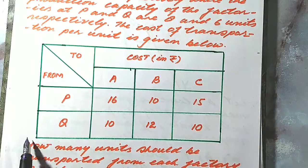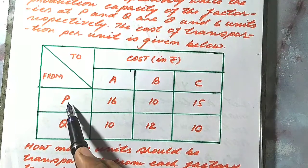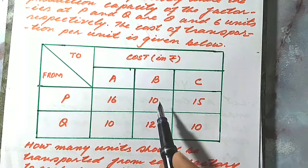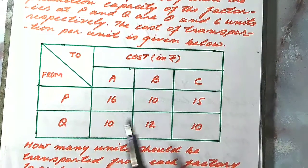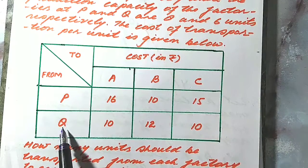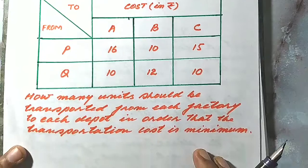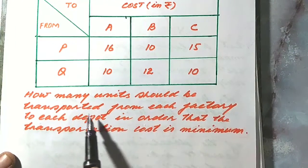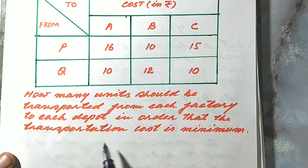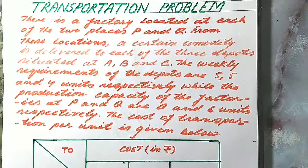This is the table for the transportation cost. The costs are in rupees: the cost for transportation of one unit from P to A is 16, from P to B is 10, from P to C is 15. The question is: how many units should be transported from each factory to each depot in order that the transportation cost is minimum? This is the problem we have to tackle.